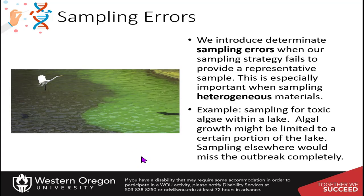Sampling errors are introduced when your sampling strategy fails to provide a representative sample. For example, if you're measuring an algal bloom in a lake but take all your samples from one region, you create a sampling error, because this is a heterogeneous sample and one region is not equivalent to another.